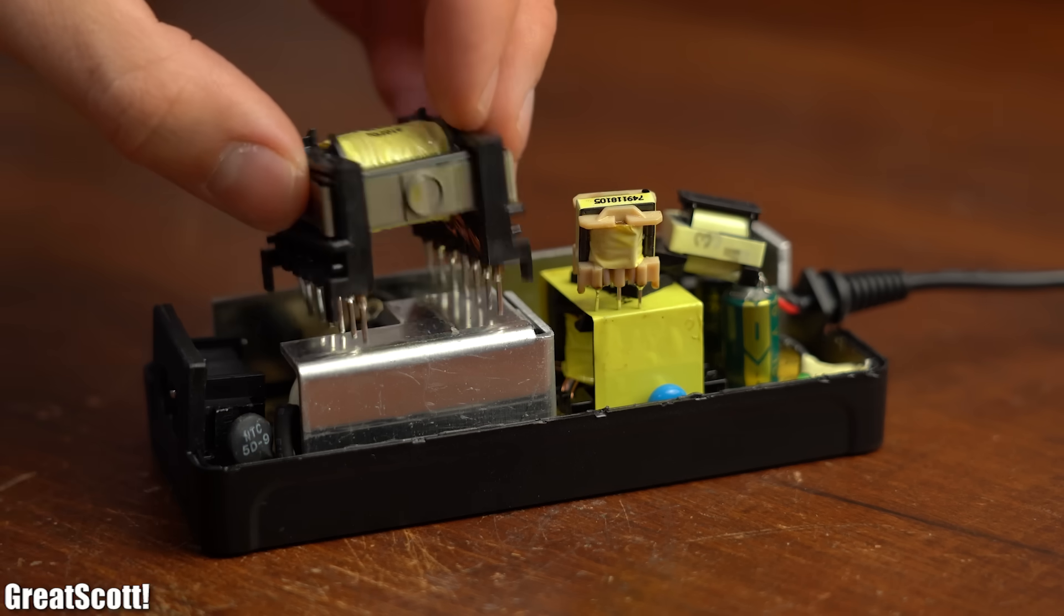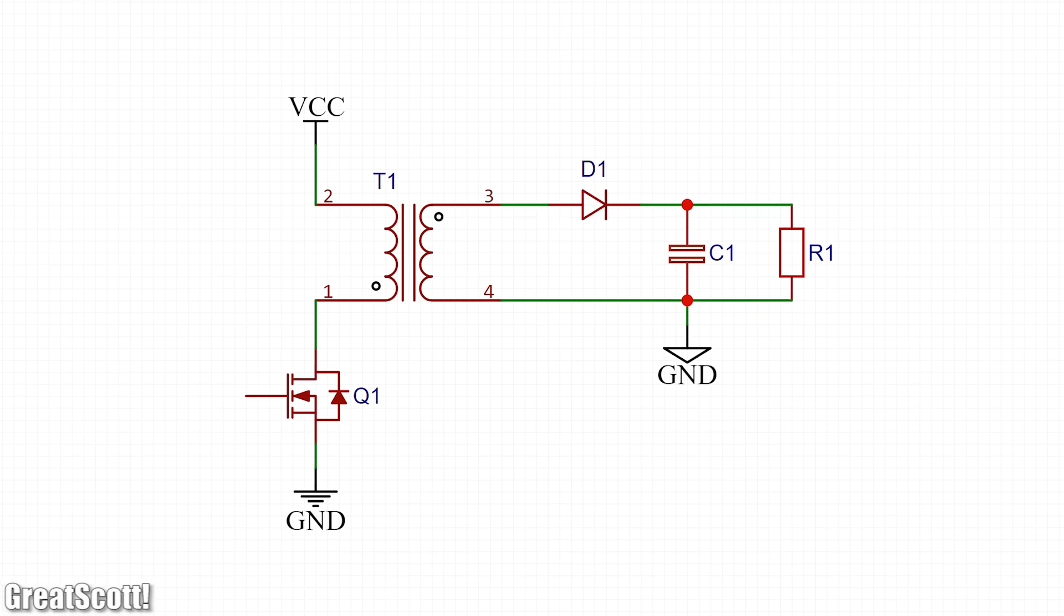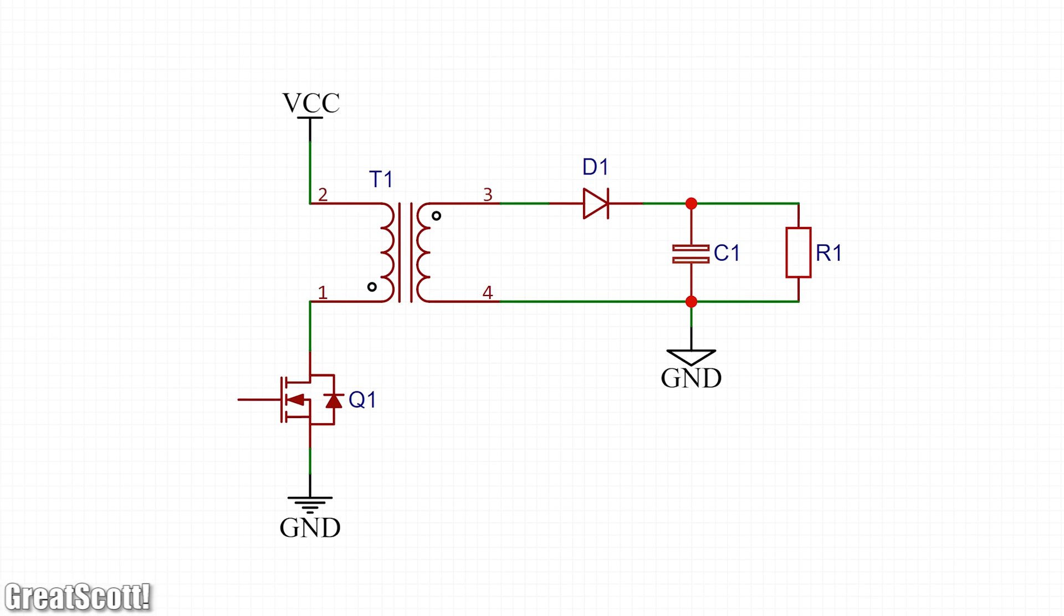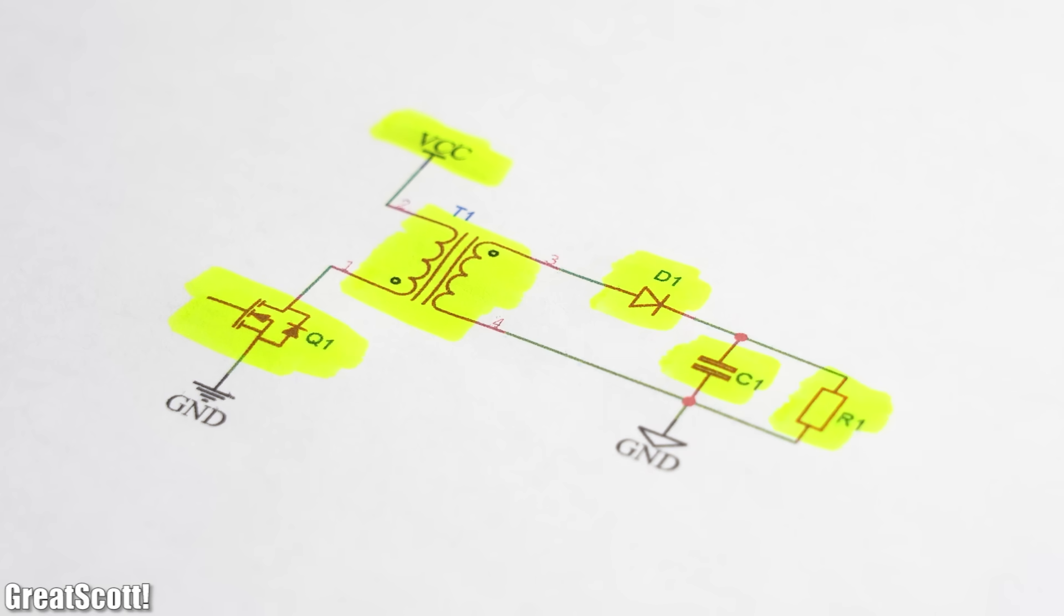So how can we use them with a flyback converter circuit? Well, here you can see a simplified schematic which only consists of a voltage source, the transformer, a MOSFET switch, a diode, a capacitor, and a load.